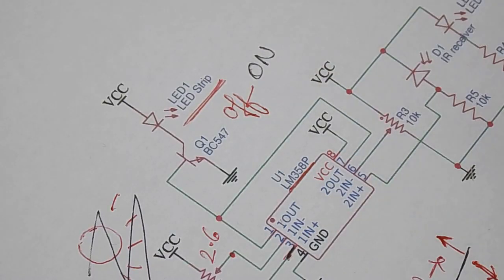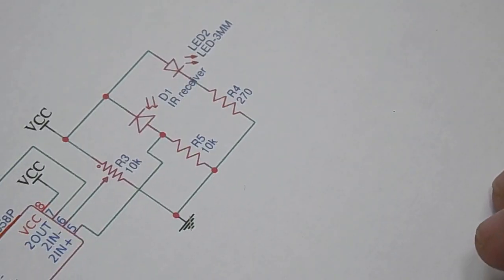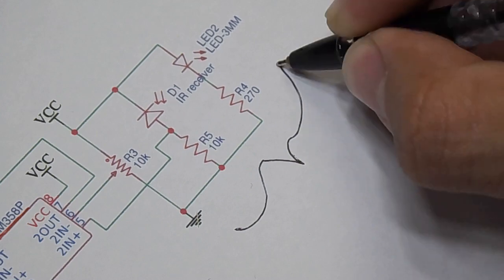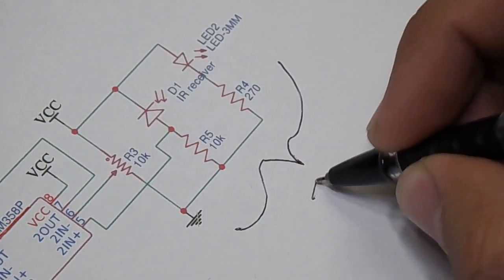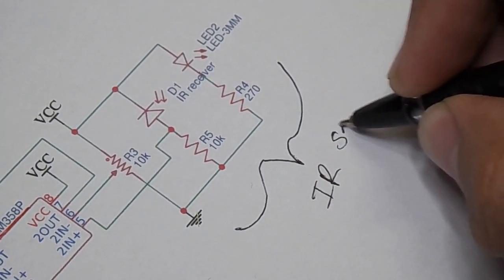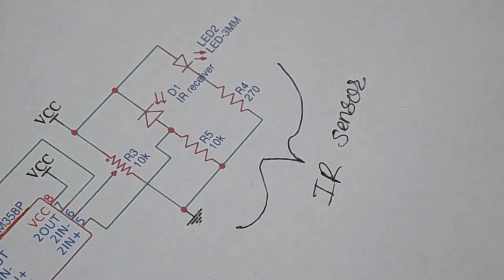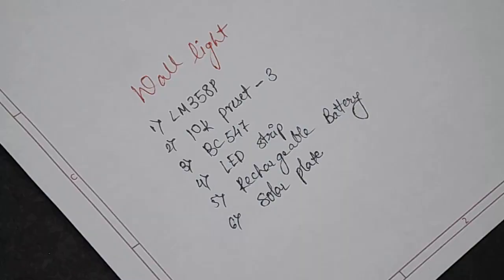Now this is the circuit of IR sensor. The LED strip will glow when there is an object detected. I will make another video in detail to see how IR sensor works.